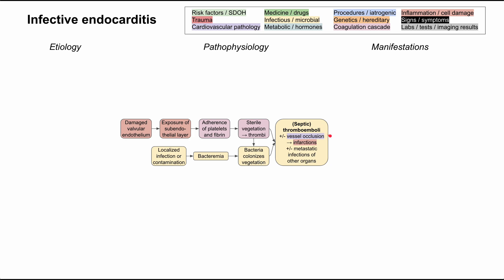The septic thromboemboli can cause vessel occlusion, which means you're no longer getting blood flow, and that can lead to infarctions. They can also metastatically infect other organs. Your heart pumps blood to all the other organs in the body, so all of those organs can be seeded with the same infection that came from the heart valves — that's called a metastatic infection. We'll get into the manifestations and see how it affects many other organ systems.